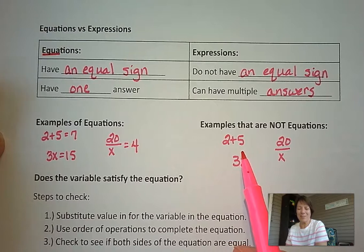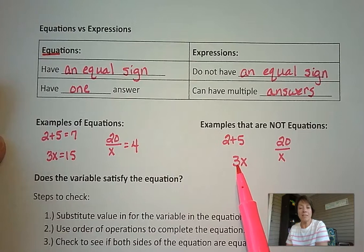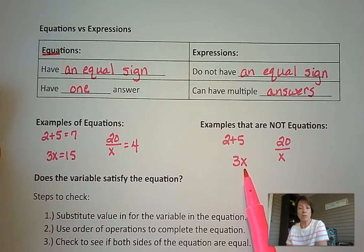Of course, 2 plus 5 is going to be 7, but our algebraic expressions, if we replace this variable x, if we substitute with different numbers, different values, then we're going to get different answers. In other words, 3 times 3 would be 9, but 3 times 4 would be 12.